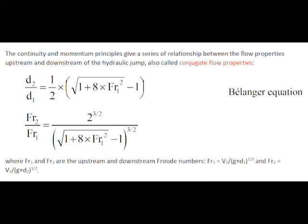By recombining the equations of continuity and momentum conservation, we obtain a series of relationships between the flow properties upstream and downstream of the hydraulic jump, called the conjugate flow properties.